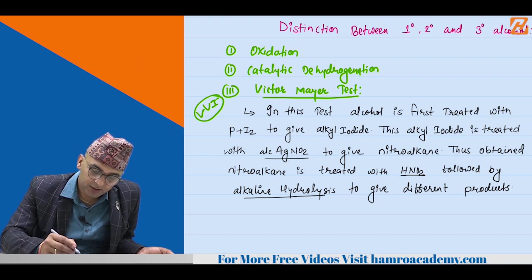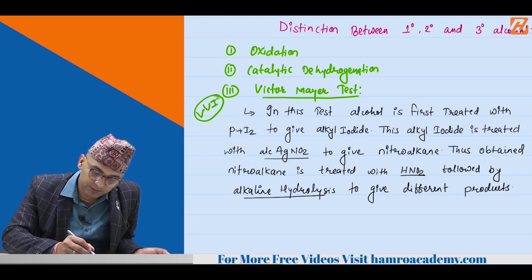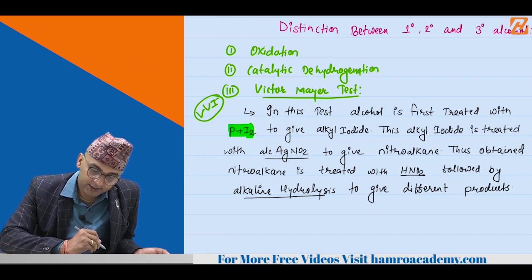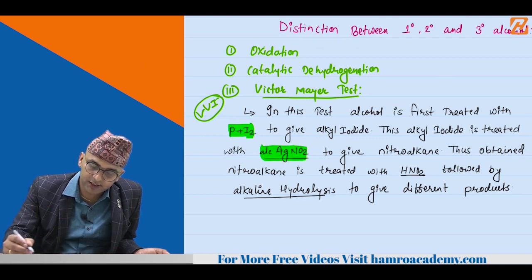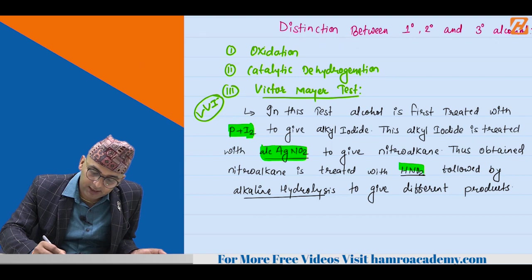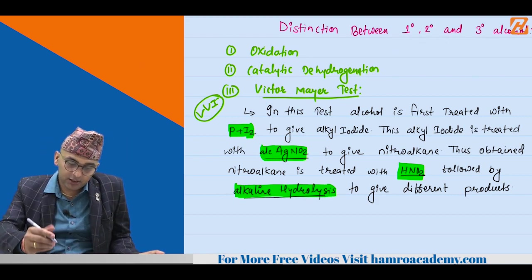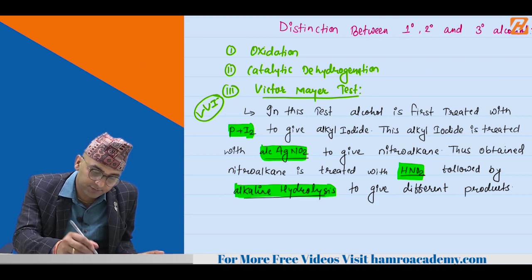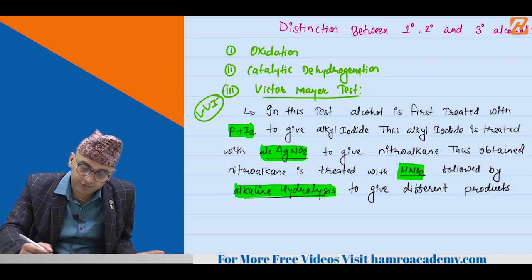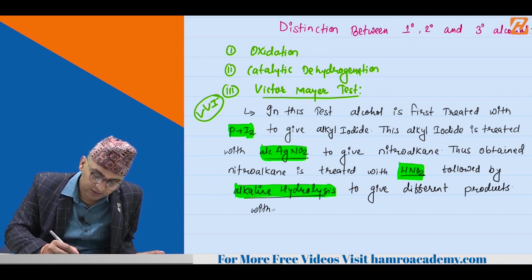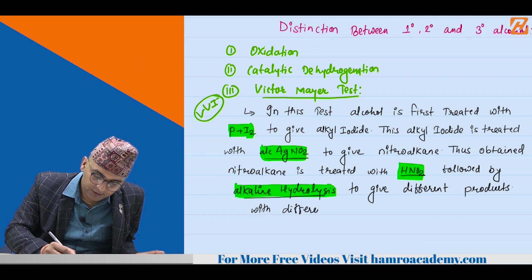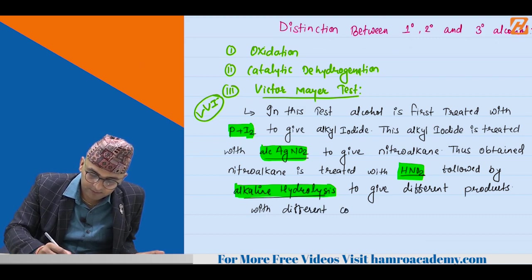The thus obtained nitroalkane is treated with nitrous acid followed by alkaline hydrolysis to give different products with different coloration. The different coloration is what allows us to distinguish between primary, secondary and tertiary alcohol in this test.